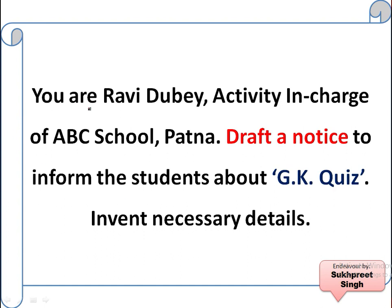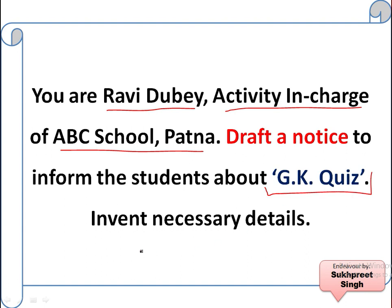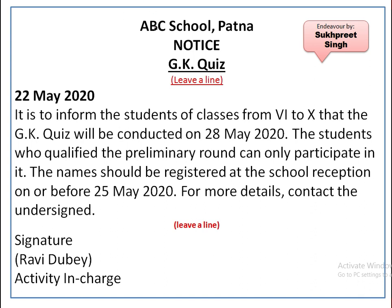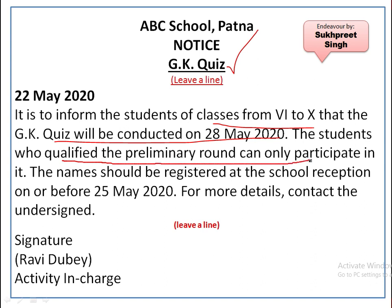Now another example. You are Ravi Dubey, Activity In-Charge at ABC School Patna. Draft a notice to inform the students about the GK Quiz — invent necessary details. The notice reads: ABC School Patna, NOTICE, title: GK Quiz. Date: 22 May 2020. It is to inform the students of classes 6 to 10 that the GK Quiz will be conducted on 28 May 2020. The students who qualify the preliminary round can only participate. Names should be registered at the school reception on or before 25 May 2020. For more details, contact the undersigned.